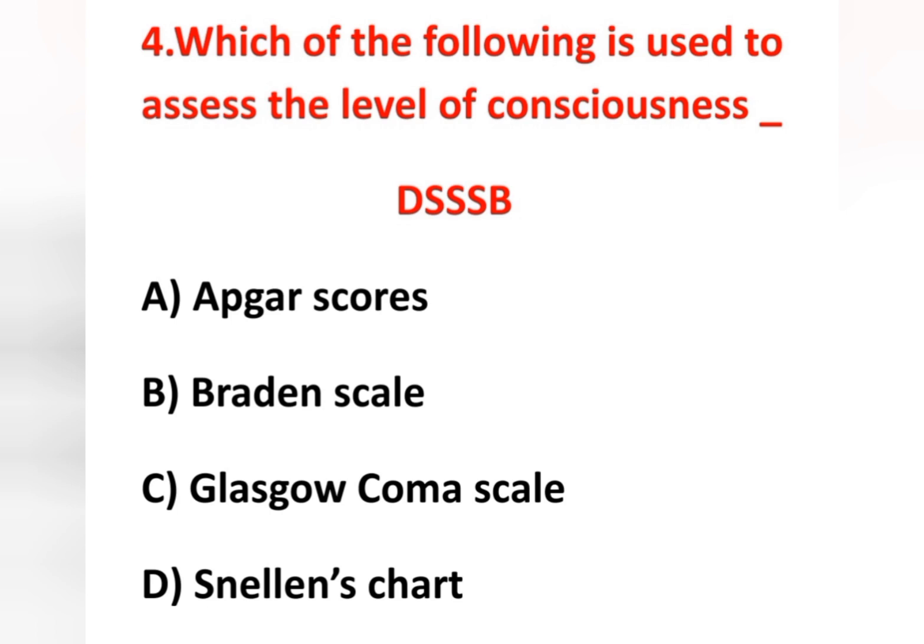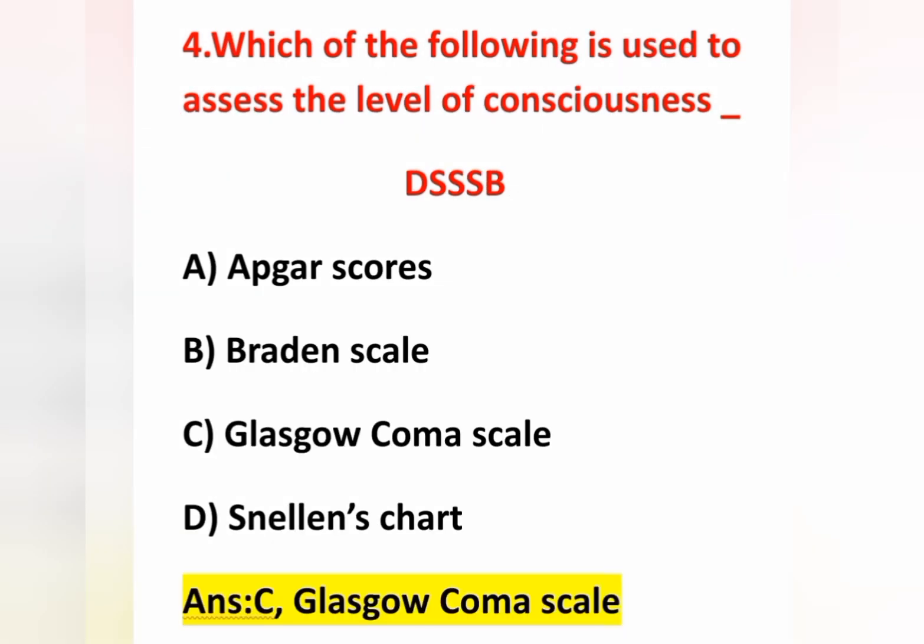Fourth question: which of the following is used to assess the level of consciousness? Options are option A APGAR score, option B Braden scale, option C Glasgow Coma Scale, option D Snellen chart. Level of consciousness is assessed by the Glasgow Coma Scale — option C is correct. It is used mainly for unconscious patients and is a neurological examination tool.